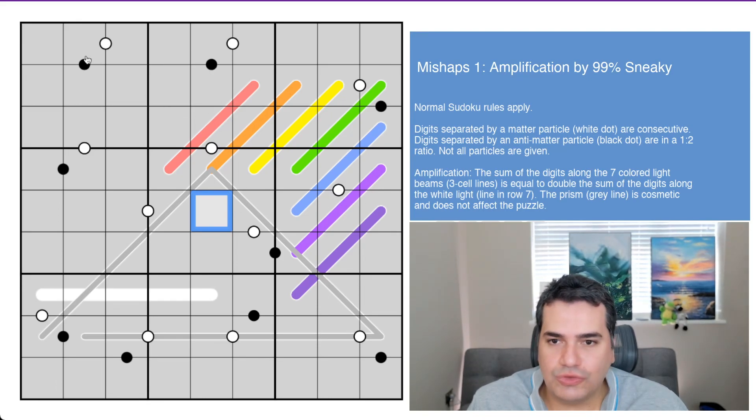Digits separated by normal Sudoku rules apply, so that means digits one through nine must be placed in every row, column, and box in the grid. Digits separated by a matter particle, a white dot, are consecutive. So presumably that means one and two, for example, would be consecutive. And then we also have digits separated by an anti-matter particle, a black dot, are in a one to two ratio. Not all particles are given.